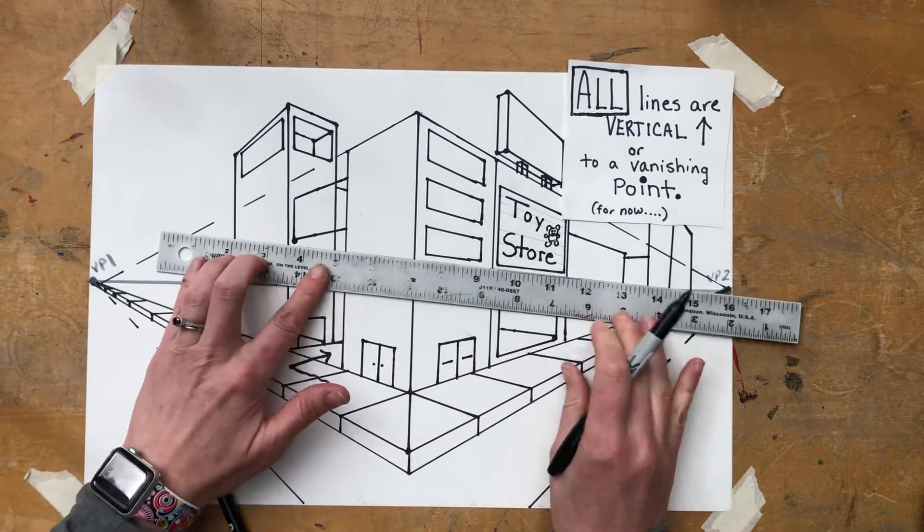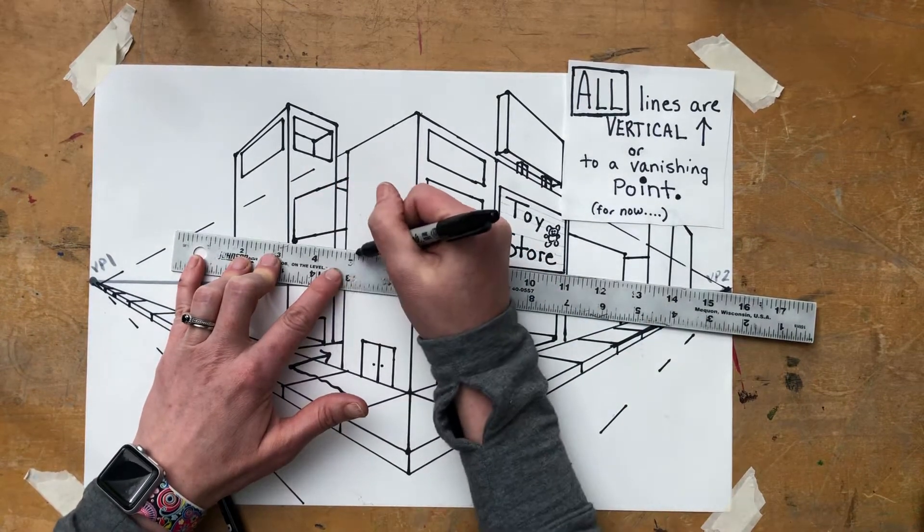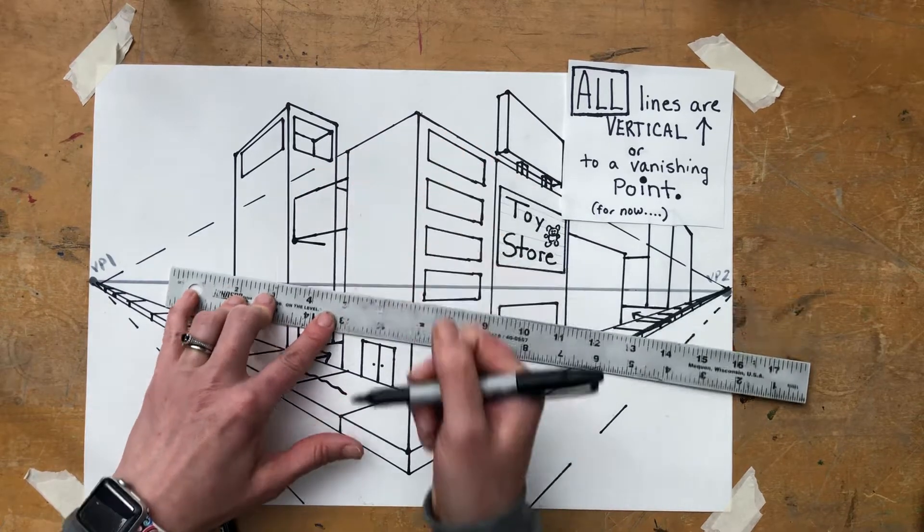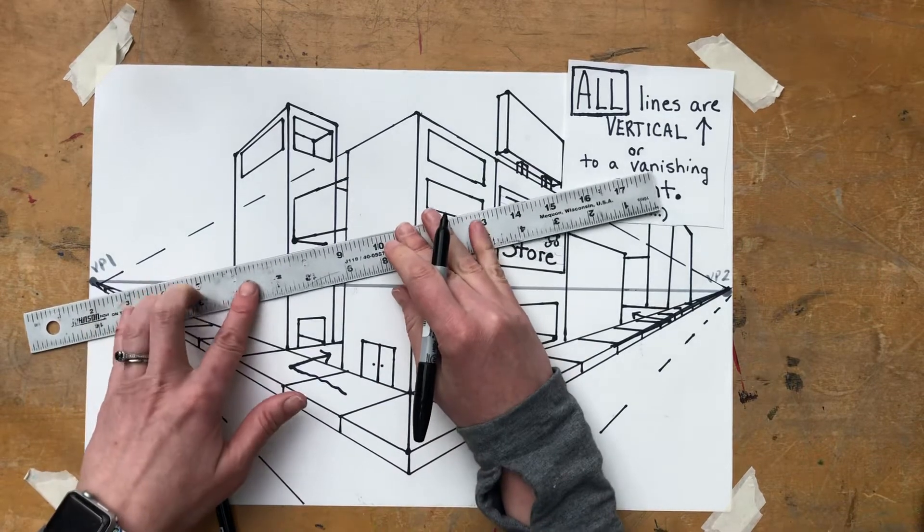So you see that dot there. Now I'm going to take it and line it up to VP2. I could go all the way over, but I'm going to just go a little line over like that. Make another dot and then go back to VP1.